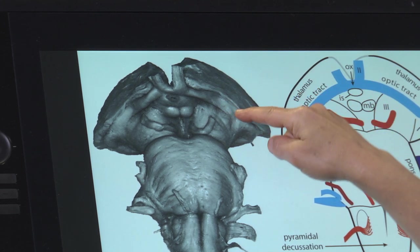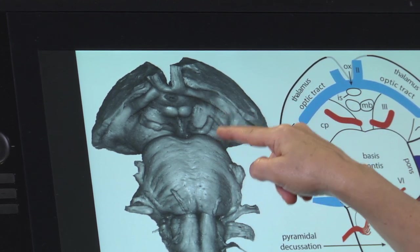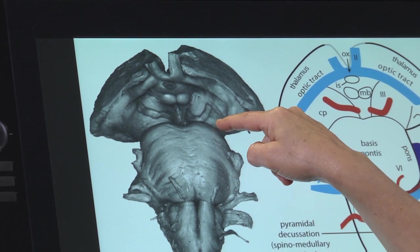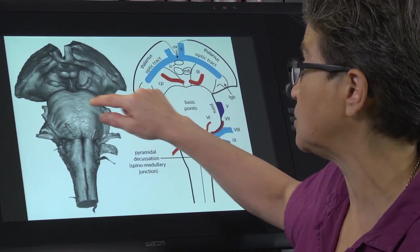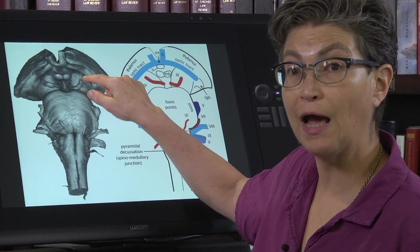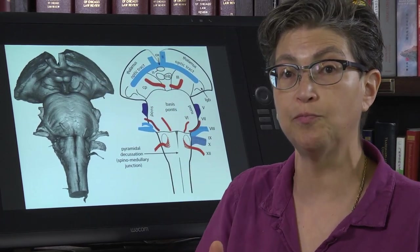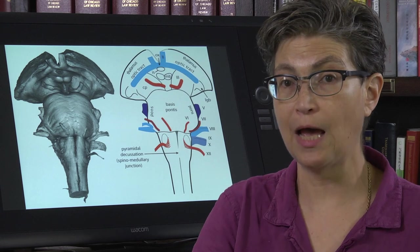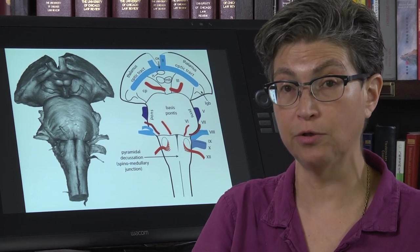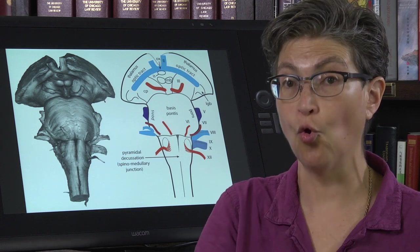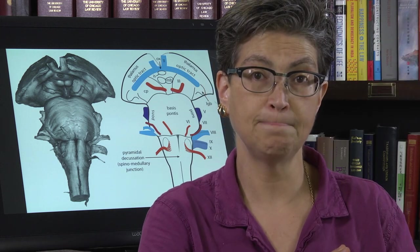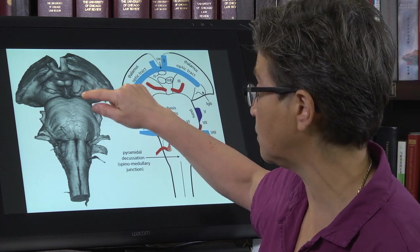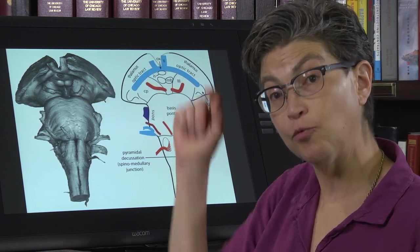The optic tract bends around the cerebral peduncles. That means you could have damage here and produce a contralateral paralysis — you couldn't voluntarily move the contralateral face or body — coupled with a loss of vision in the contralateral visual field. So if you damage both the cerebral peduncle and the optic tract, that would be the result.